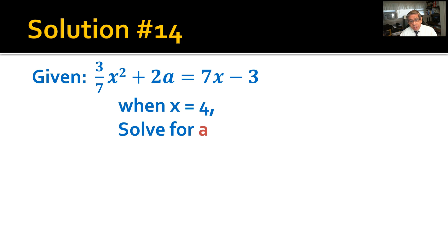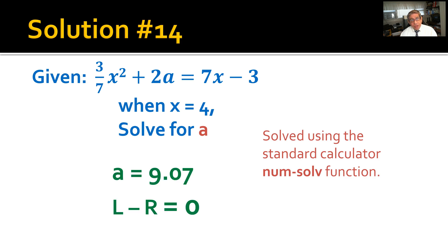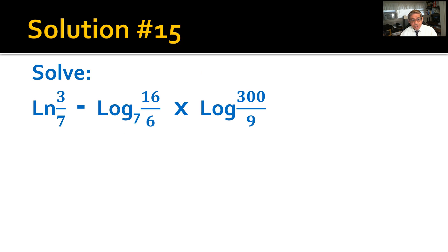Solution number 14: Given this equation, 3/7 x² + 2a = 7x - 3, and then assuming that x is 4, you solve this using the calculator using the num solve function. The value of a comes out to 9.07 rounded, and L - R = 0, as I explained in the lesson on this particular topic. That means that is an answer exactly.